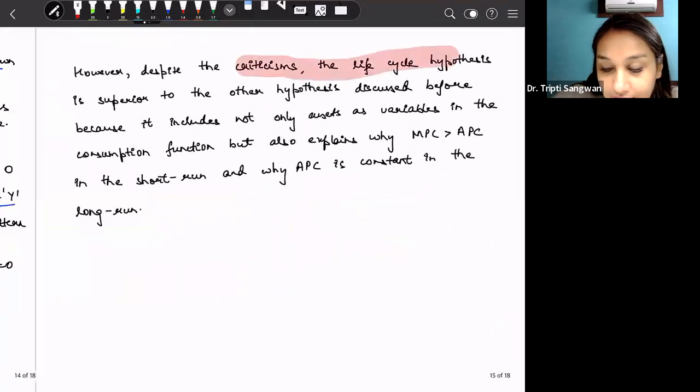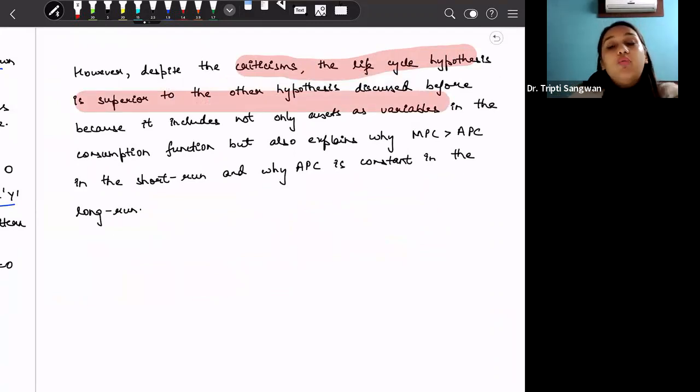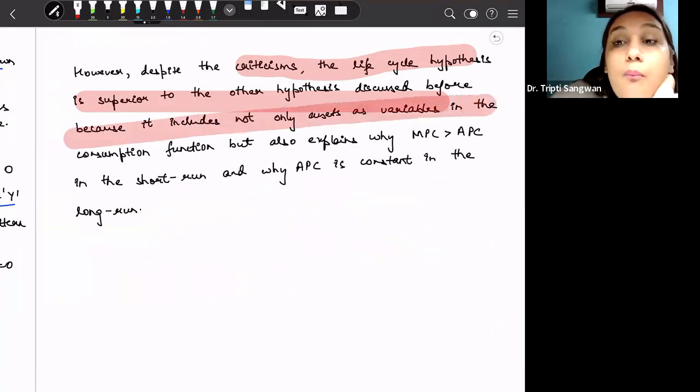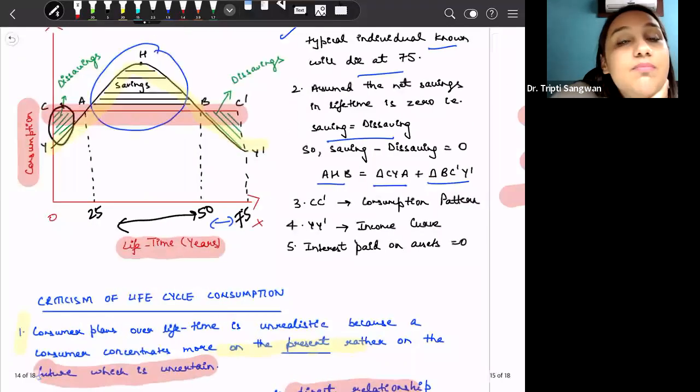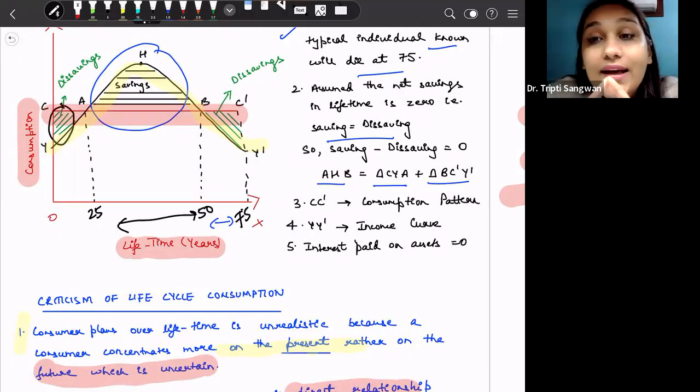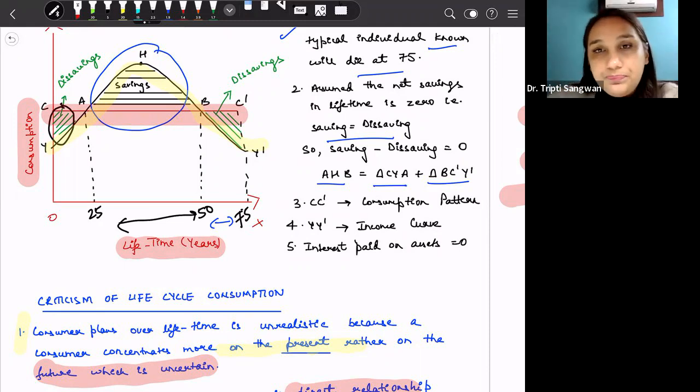However, despite the criticism, life cycle consumption is superior to other hypotheses that we have discussed before. Because it includes not only assets as variables in the consumption function, but it also explains why MPC is greater than APC in the short run and why APC is constant in the long run. This theory has explained why this consumption curve, straight consumption curve C-C dash, is constant, which means that APC is constant in the long run. So this was our third theory, that is life cycle consumption theory.